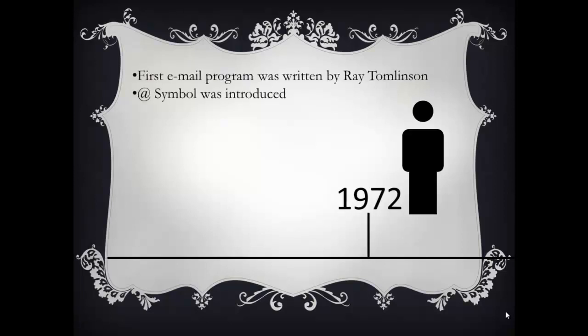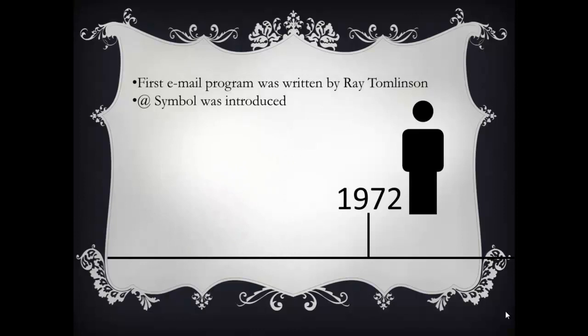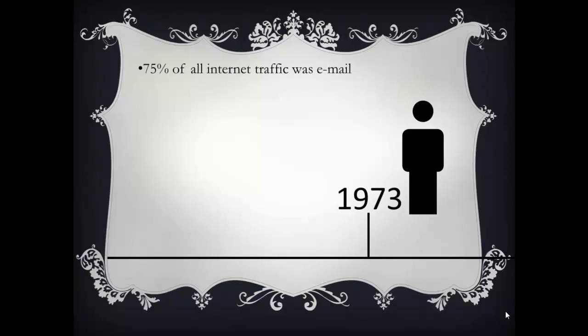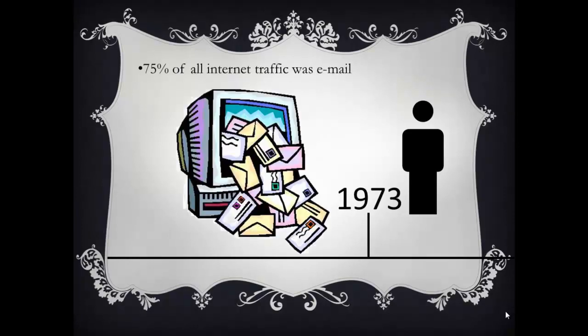In 1972, the first email program was written by Ray Tomlinson, and in 1972 the at-rate symbol was introduced. In 1973, 75% of all traffic was email. In 1974, the term internet was first used.